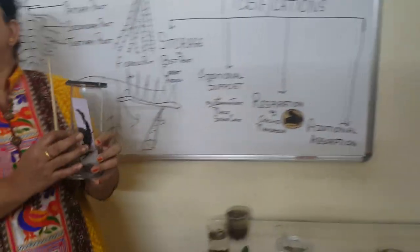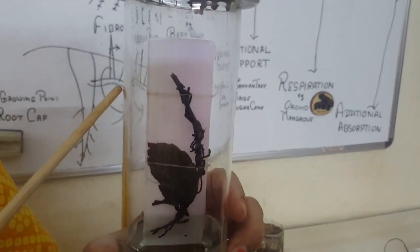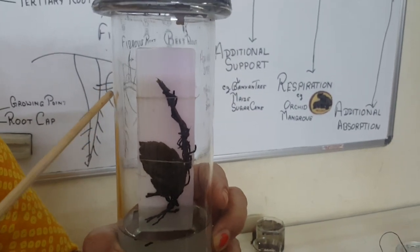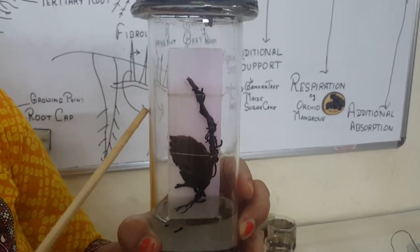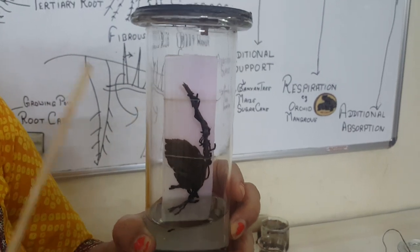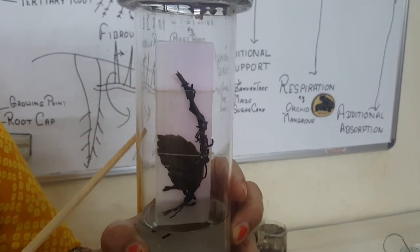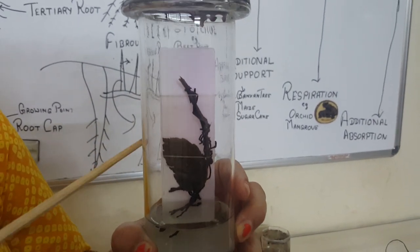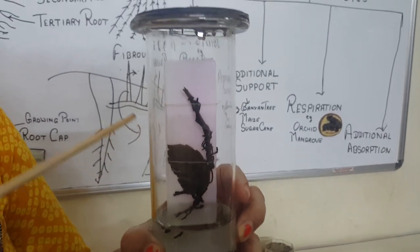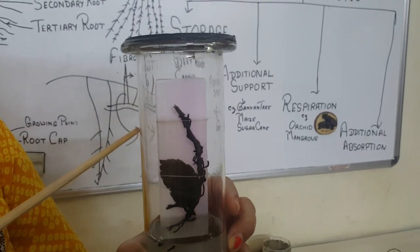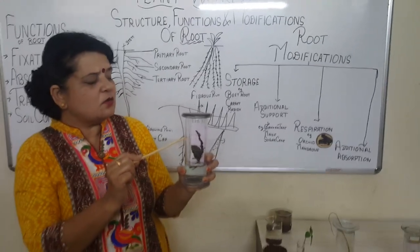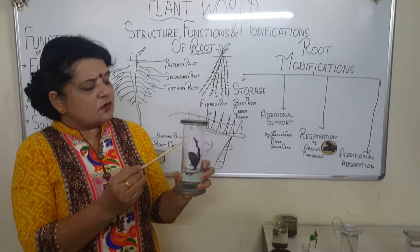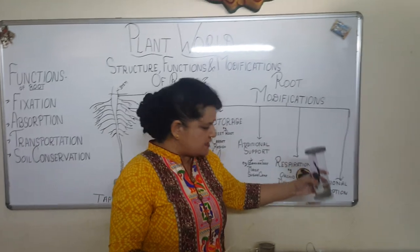Here is another specimen — a parasitic plant called Cuscuta. The plant with leaves is the host plant, and the vine-like thing clinging to it is Cuscuta, which typically has a yellow stem and cannot make its own food. It develops root-like structures called haustoria that penetrate the body of the host plant. Whatever water, minerals, and food the host plant takes is also taken by the Cuscuta. Eventually, Cuscuta keeps growing and kills the host plant.